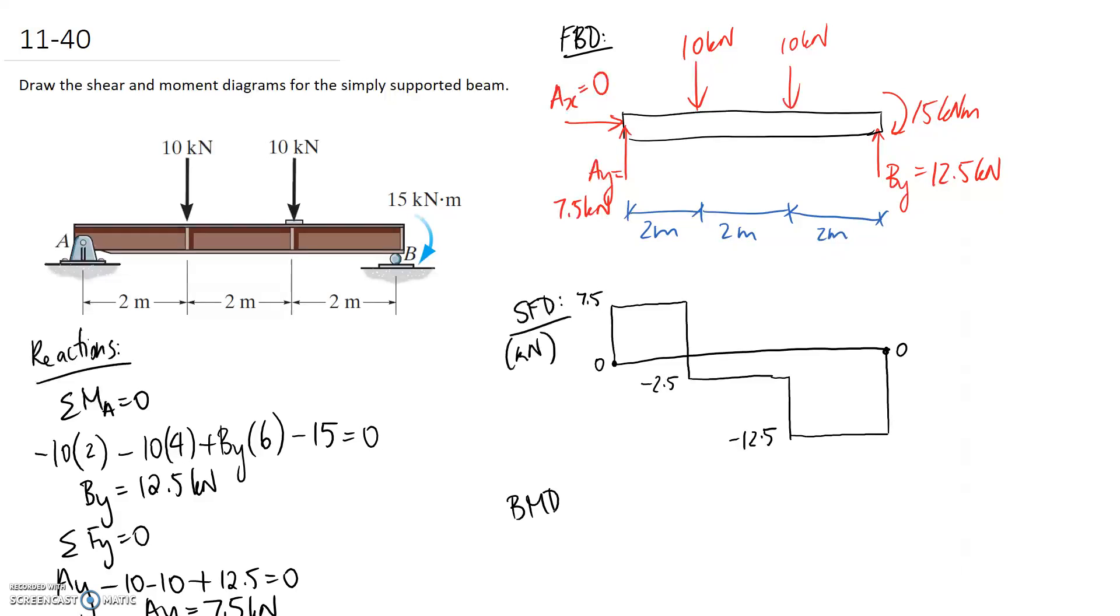Now we can move on to the bending moment diagram. The units for this one are going to be in kilonewton metres. For the bending moment diagram we need to focus on the areas inside the shear force diagram, as well as any extra couples that we have. We have this 15kNm couple on the end which will be included in the diagram.